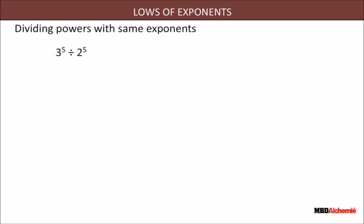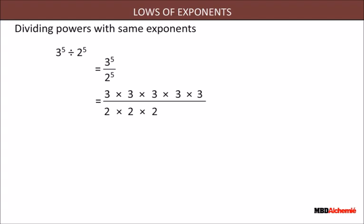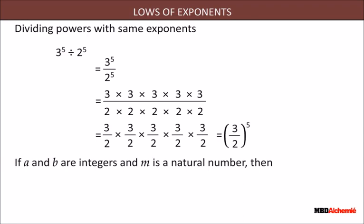Dividing powers with the same exponents: dividing 3⁵ by 2⁵ can be written as (3 × 3 × 3 × 3 × 3) ÷ (2 × 2 × 2 × 2 × 2), which equals (3/2) × (3/2) × (3/2) × (3/2) × (3/2). Therefore, if a and b are integers and m is a natural number, then a^m ÷ b^m = (a/b)^m.